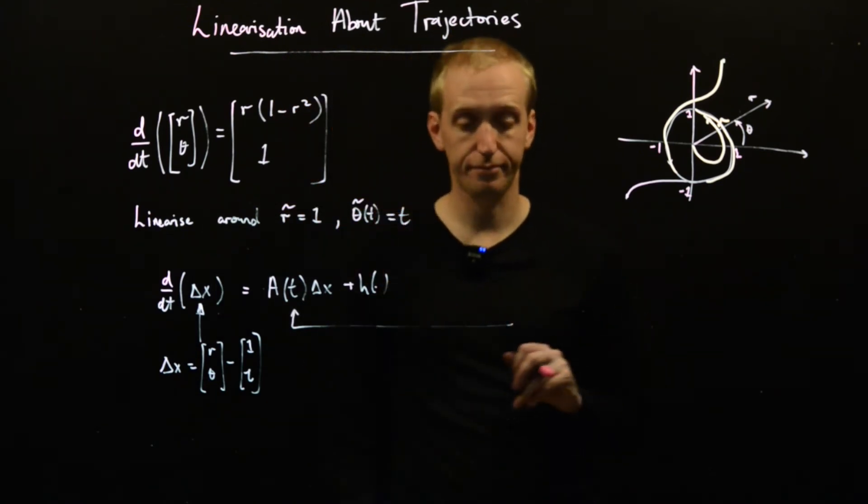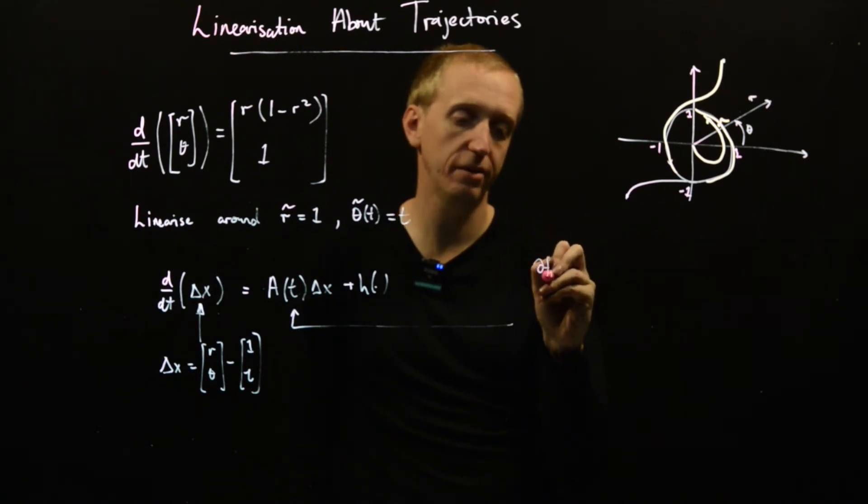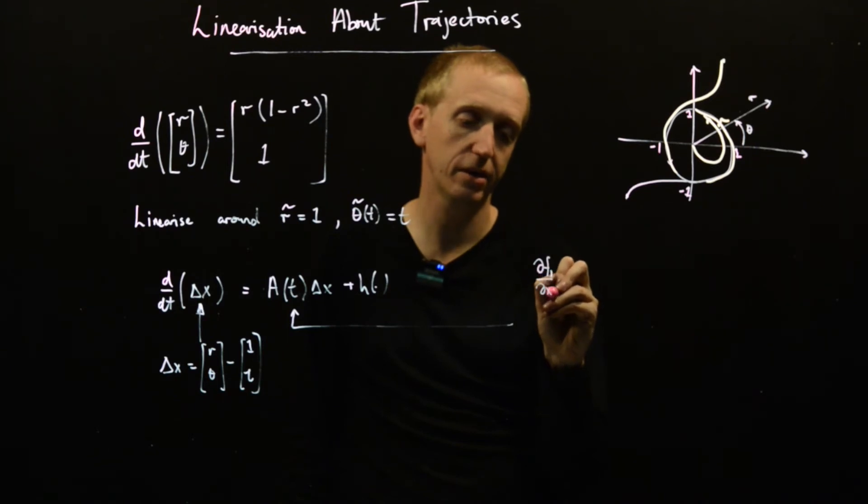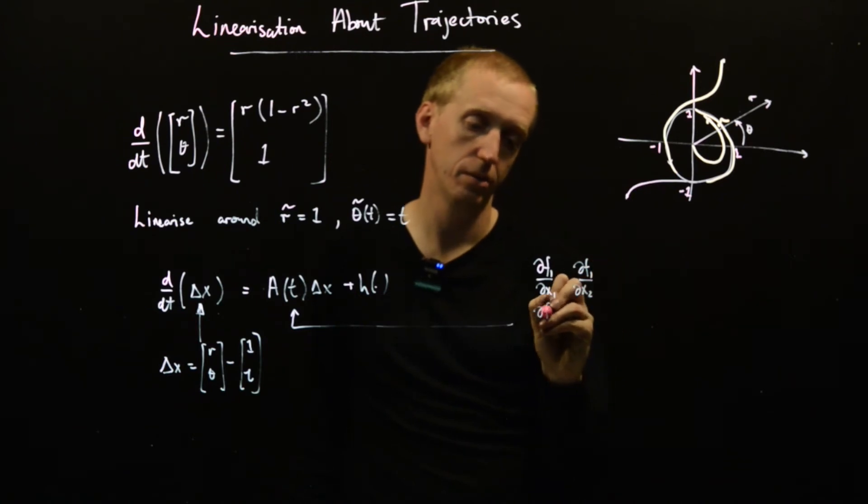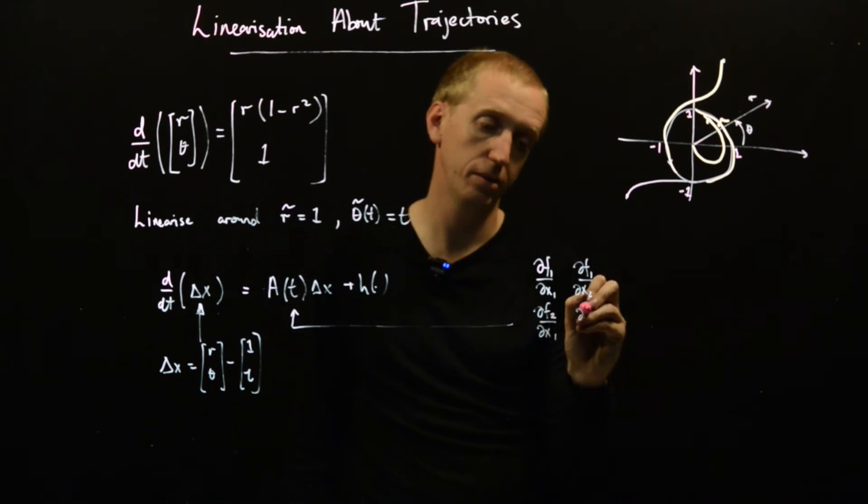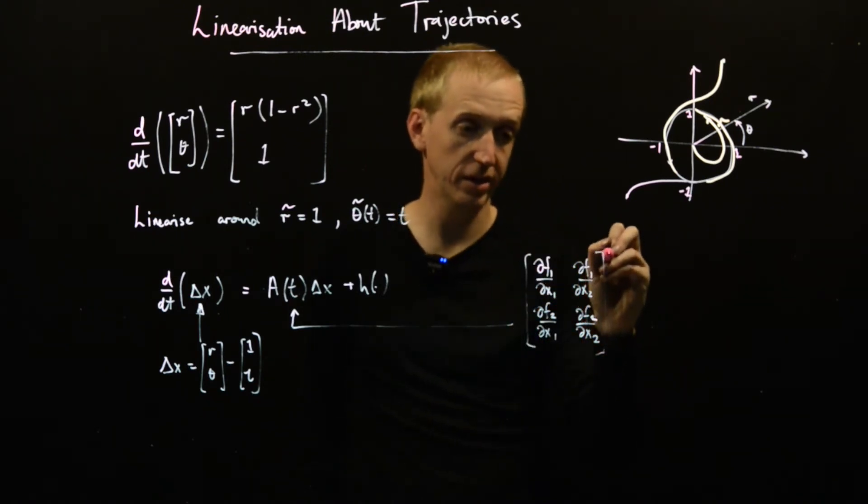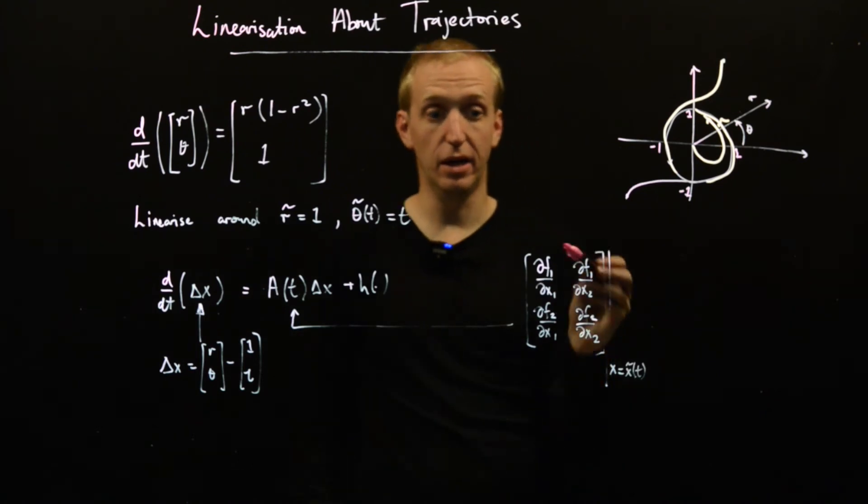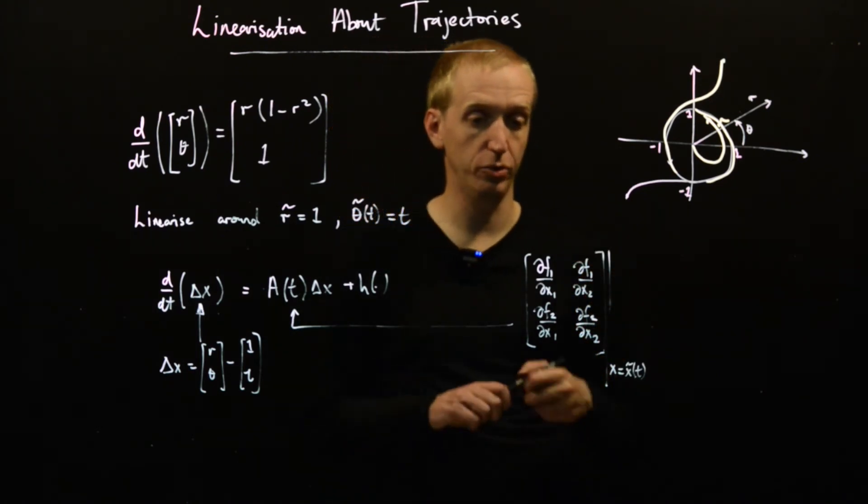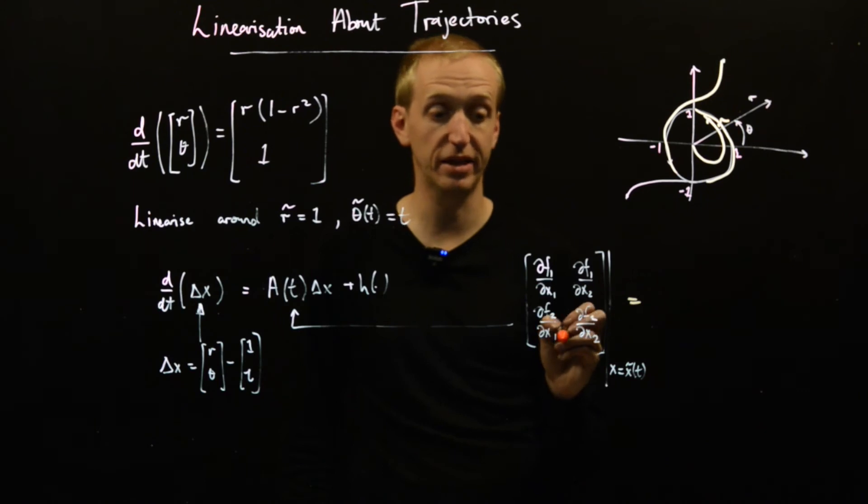Now we just apply our Jacobian method. We need to find df1/dx1, df1/dx2, df2/dx1, and df2/dx2, and we need to evaluate this at x equals x tilde of t. So let's just do it.